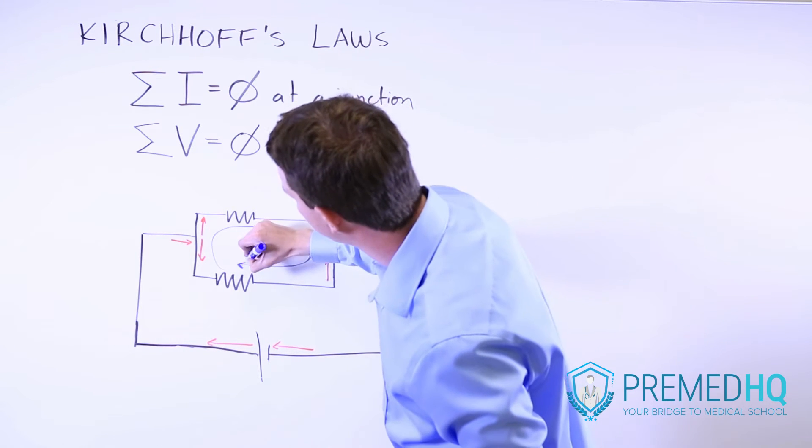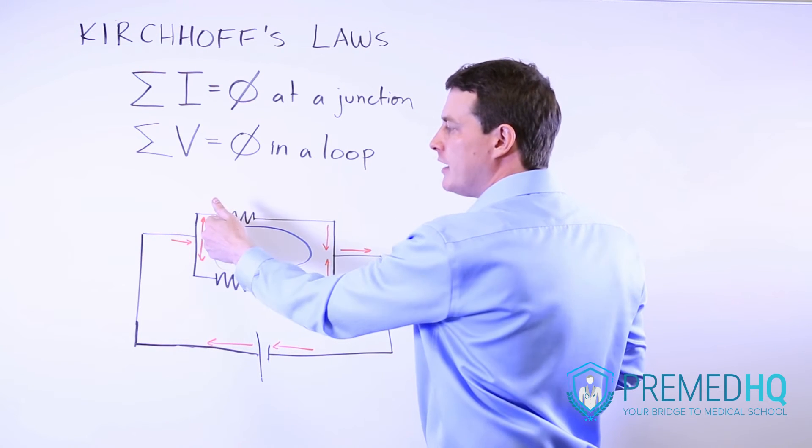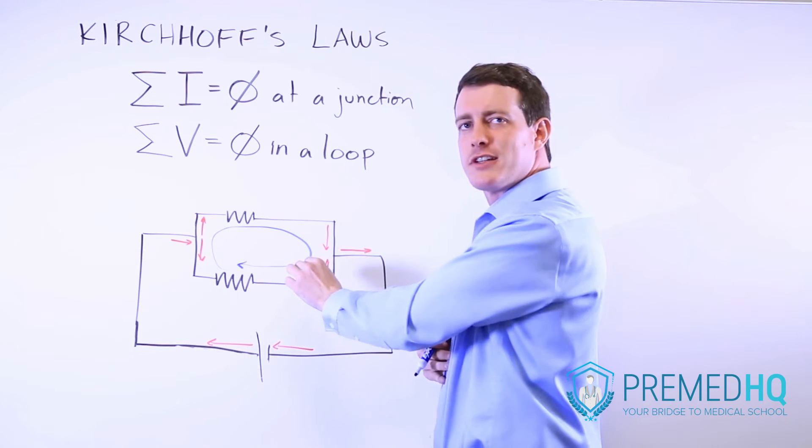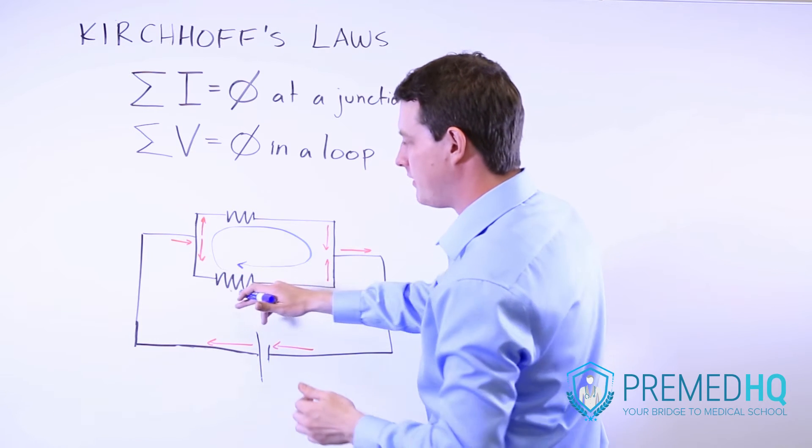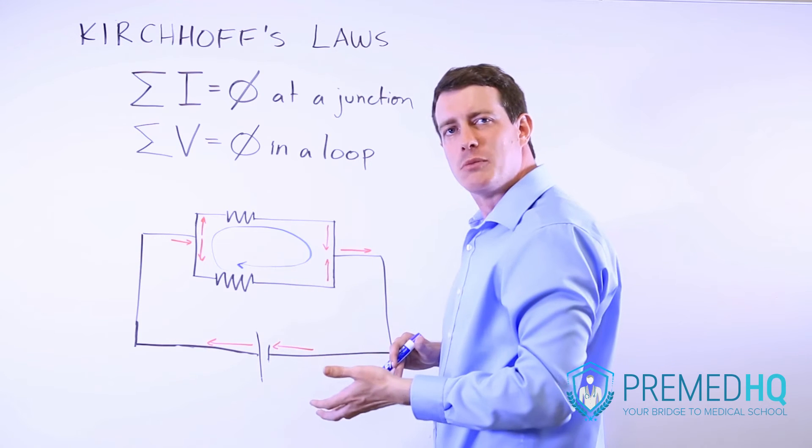And as you cross this resistor, notice that the current will be going this way. The drop of voltage will be following the direction of the loop, whereas down here the drop of current or drop of voltage is going to be opposite the direction of the loop.